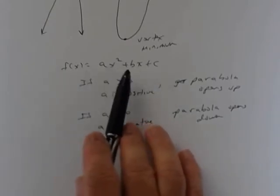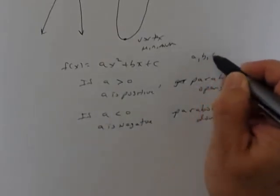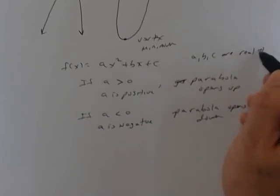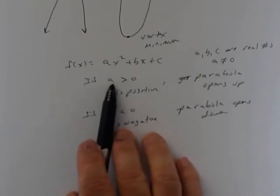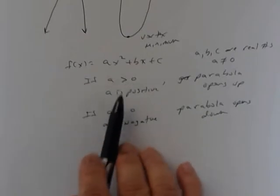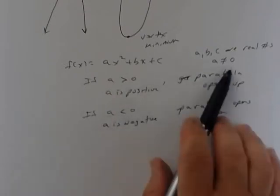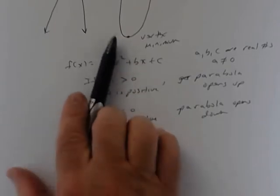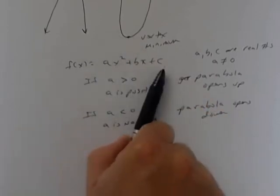In a quadratic function, a, b, and c can be any real number except a cannot equal zero. A can never be zero — I never put an equal sign in those inequalities. Because if a were zero, zero times x squared disappears, and it would no longer be a quadratic — it would be a linear function. B and c can be zero, but a never can.